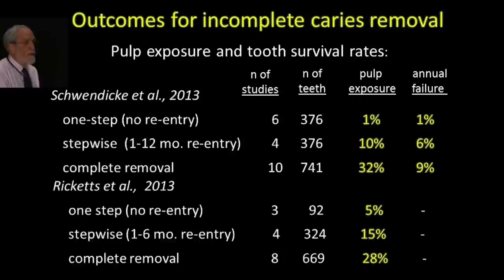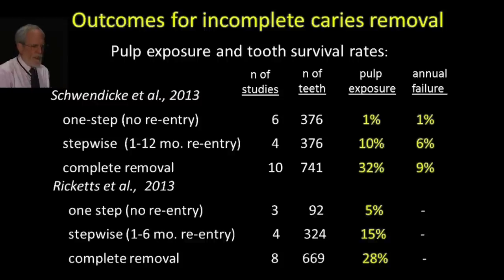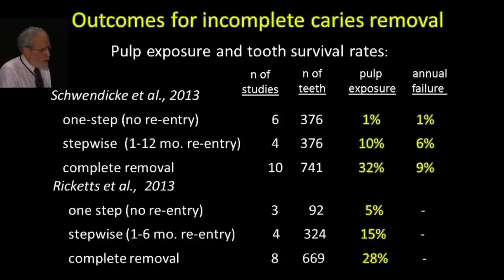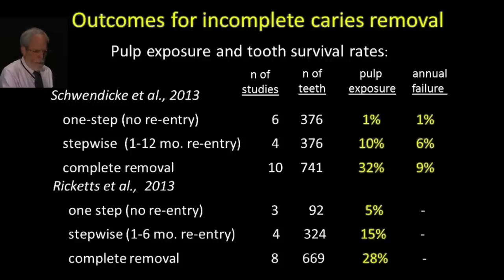The control arm — complete caries removal — included 10 studies with 741 teeth, producing a 32% pulp exposure rate and a 9% annual failure rate. At least in the short term, the one-step method looks better than either alternative in both annual failure rate and likelihood of pulp exposure.